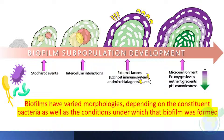Biofilms have varied morphologies depending on the constituent bacteria as well as the conditions under which the biofilm was formed. In the last few years, interest in biofilm formation by a group of clinically relevant bacteria which cause high mortality, called ESKAPE — Enterococcus faecalis, Staphylococcus aureus, Klebsiella pneumoniae, Acinetobacter baumannii, Pseudomonas aeruginosa, and Enterobacter species — has intensified.